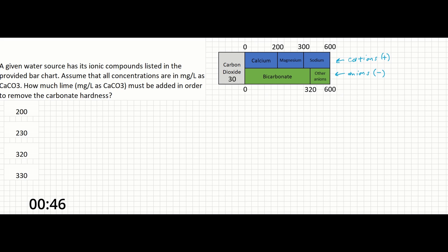The problem asks us to find the carbonate hardness. Carbonate hardness is going to be equal to the lower of the following two numbers: the total hardness and the alkalinity. So let's define these terms next.